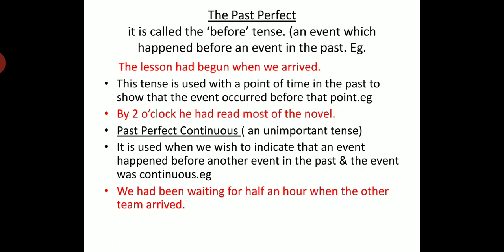In the sentence 'The lesson had begun when we arrived,' the past perfect is necessary to make the order of events clear — first the beginning of the lesson, then our arrival. This tense is used with a point of time in the past to show that the event occurred before that point.